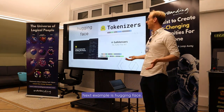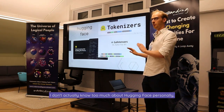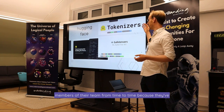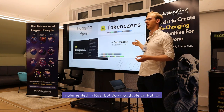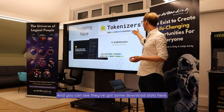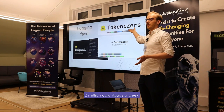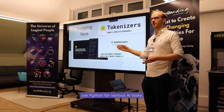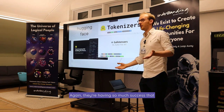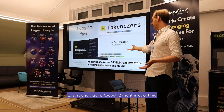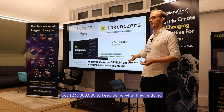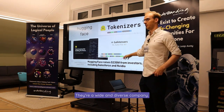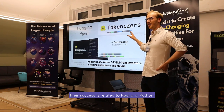Next example is Hugging Face — they're an AI company. As a PyO3 maintainer, I interact with some members of their team because they've got at least two libraries implemented in Rust but downloadable on Python. Their tokenizers library is getting 2 million downloads a week. Their SafeTensors library gets 10 million downloads a month. Both are implemented in Rust and used for various AI tasks. They've had so much success that in August they got $235 million in funding to keep doing what they're doing.